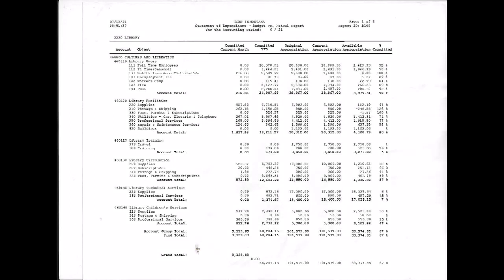Looking at the budget versus actual report is most helpful for boards in seeing what's going on at a glance. The budget is your starting point and the approved level of funding for the library. For the expenditure report, you will see columns for Fund, Account, and Object Codes. These give you detail about where funds are being spent.